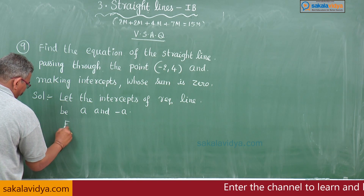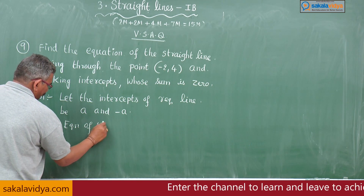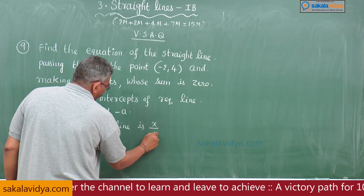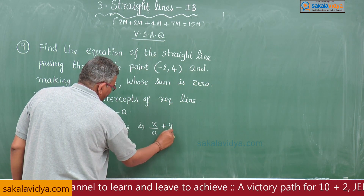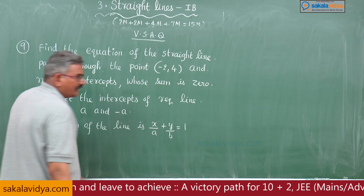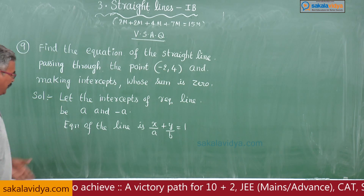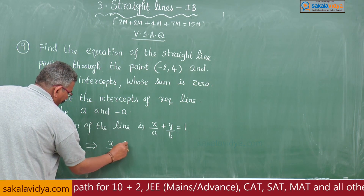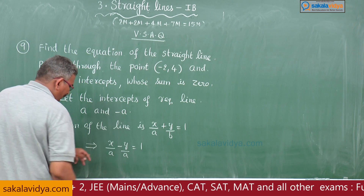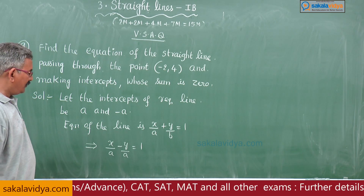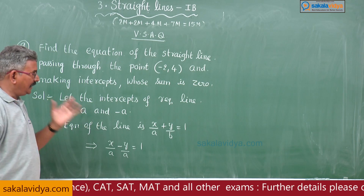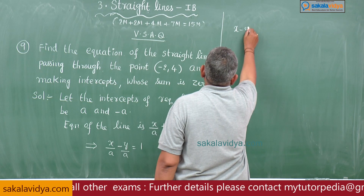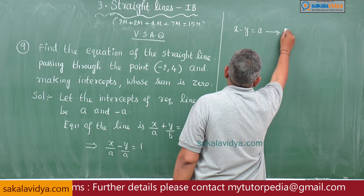The equation of the line is x by a plus y by b is equal to 1. Substituting b equals minus a, we get x by a minus y by a is equal to 1. Multiplying both sides by a, we get x minus y is equal to a — call this equation 1.